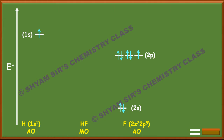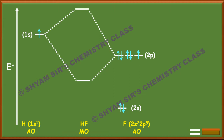The 1s orbital of hydrogen combines with the 2pz orbital of fluorine to form one bonding molecular orbital and one anti-bonding molecular orbital. The 2s orbital of fluorine remains as non-bonding, and the 2px and 2py orbitals also remain as non-bonding — their energies do not change upon forming the MO.